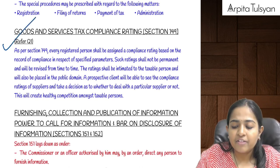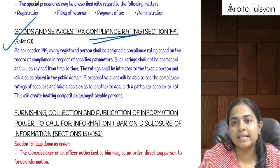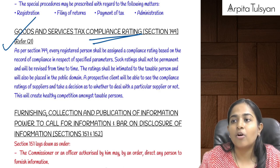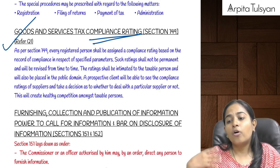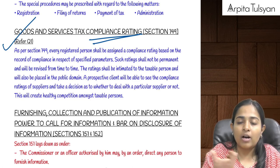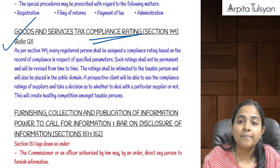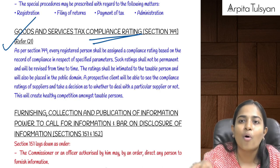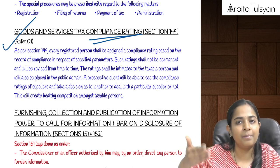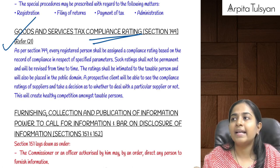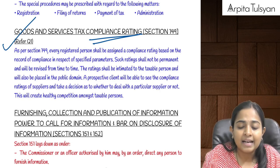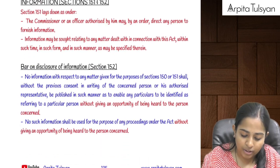Section 149 talks about GST compliance rating. This procedure is not yet fully functional, but every registered person will be assigned a rating — say, on a scale of one to ten — based on their record of compliances, indicating whether they are a proper GST-compliant person. This rating is not permanent; it will keep revising from time to time. Other businesses can use this rating to decide whether to do business with you.